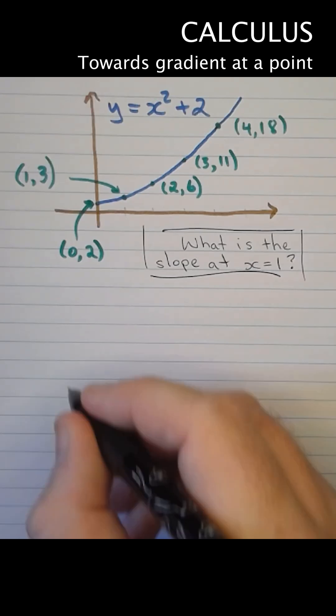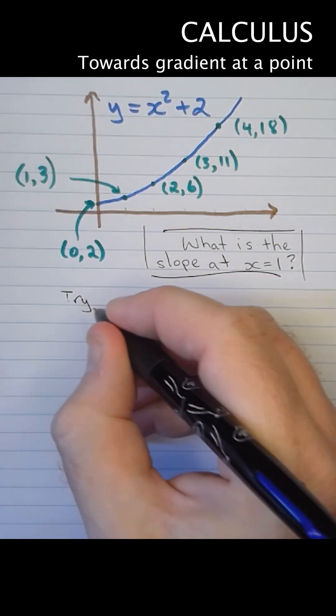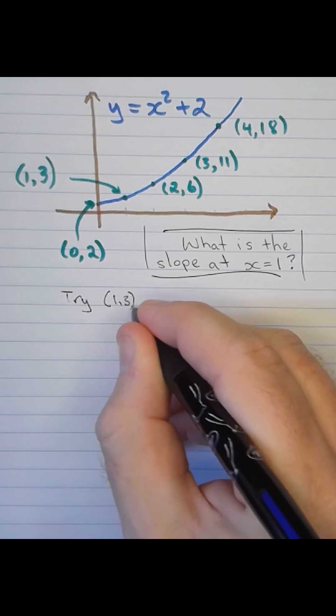Let's find the slope of this curve at x equals 1. We'd just take two points and find the change in y divided by the change in x, delta y over delta x.